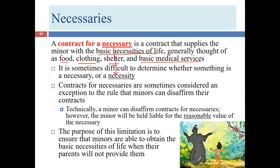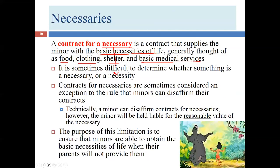Technically, a contract for necessaries isn't a valid contract in the traditional sense — legal capacity is missing, so one element is absent. Instead, courts use a quasi-contract theory: the minor will be held to pay the reasonable value of the necessary — usually the price paid, but not necessarily so.